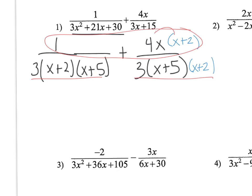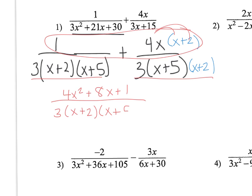So it's going to be 4x squared plus 8x plus 1 over 3 times x plus 2 times x plus 5. Then you want to see if you can factor the numerator further. If I factor something out of here, I need factors of 4 that add up to 8, and there are none, so this can't factor out any further.